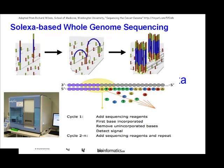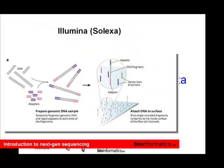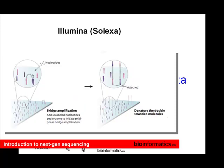I'm going to talk a little bit about Solexa first. Basically, the way this works: you start with your DNA, add adapters, and with those adapters you attach your DNA to a solid support. You then do bridge amplification — PCR of your DNA — so that you create these islands of all the same DNA, because each molecule attaches itself to the surface right next to where it first attached.